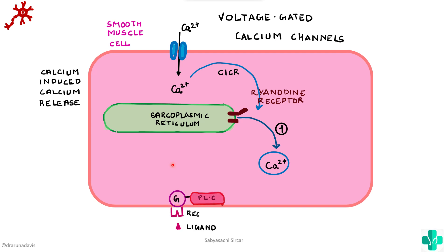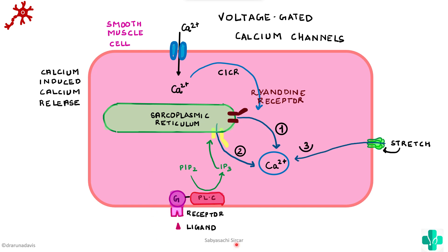The second method is when a ligand binds to a receptor coupled to a G-protein. This G-protein coupled receptor increases the amount of IP3, which in turn causes release of calcium from the sarcoplasmic reticulum — that is the IP3-DAG pathway. The third mechanism is mechanical stretch, which can open calcium channels causing influx of calcium. Similarly, ligands can also bind to different receptors present and increase the amount of calcium.